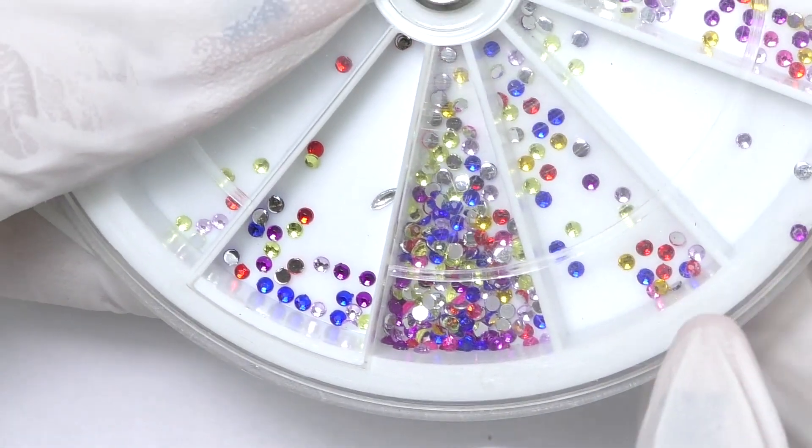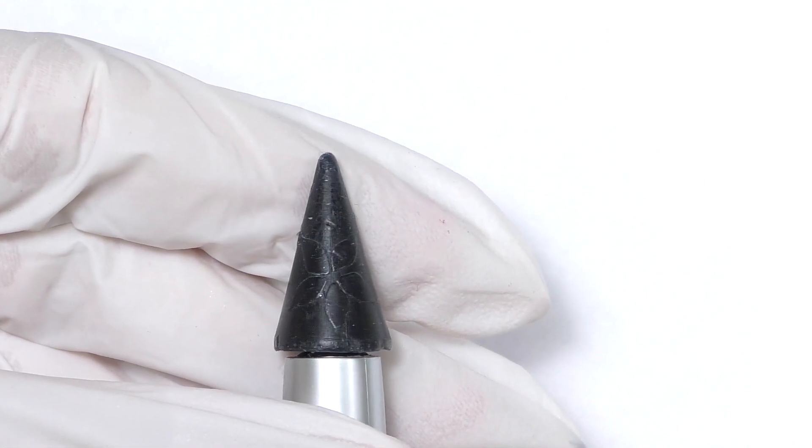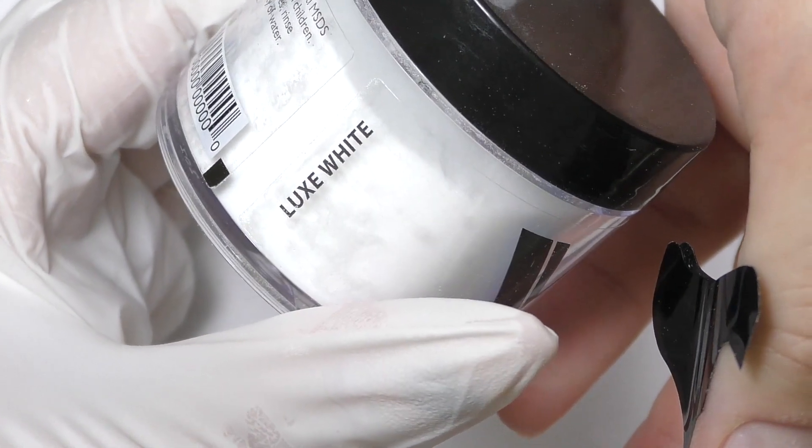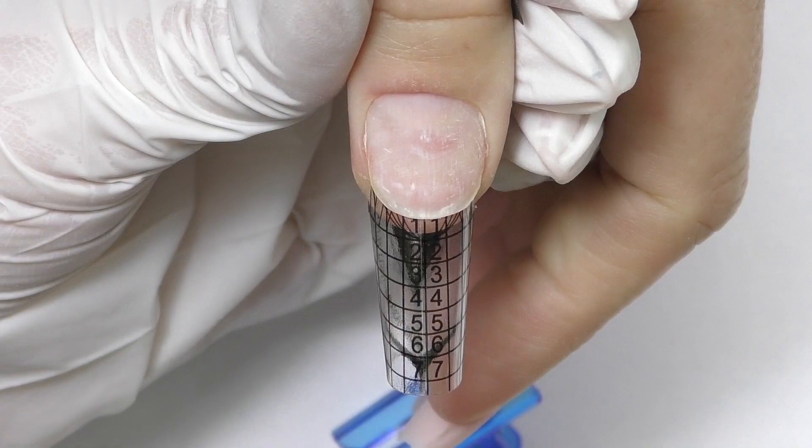I'm sorry there's a little mess because I dropped it. To pick up the rhinestones I'm using crystal katana pickup tool. For baby boomer I will use lux white powder by Valentino and a perfect nude and a monomer of course. So let's get started.